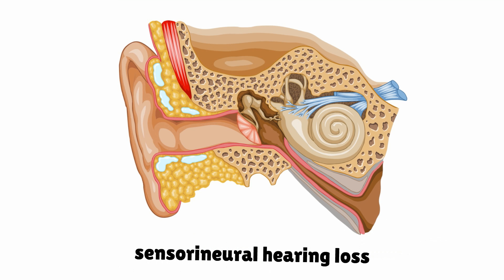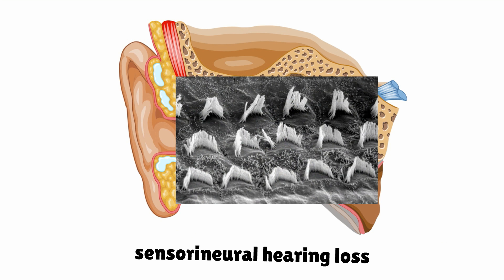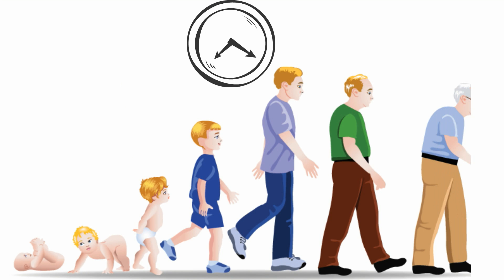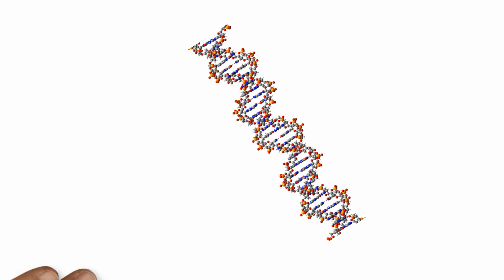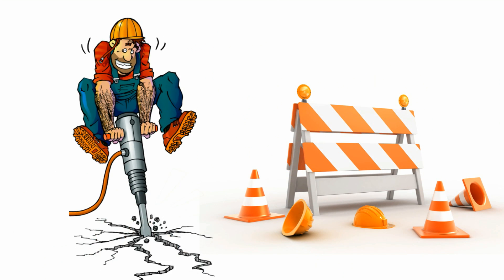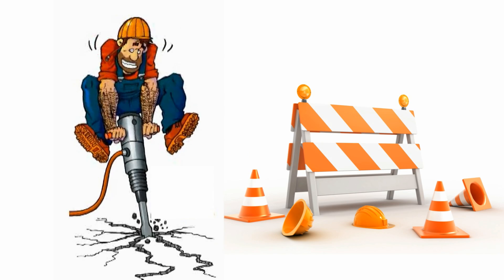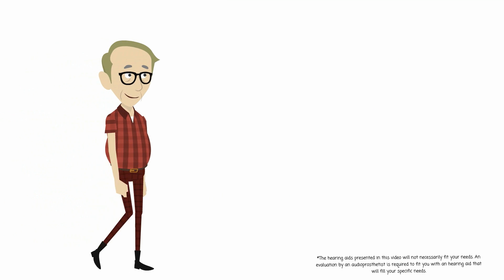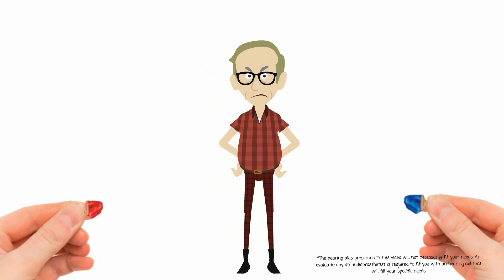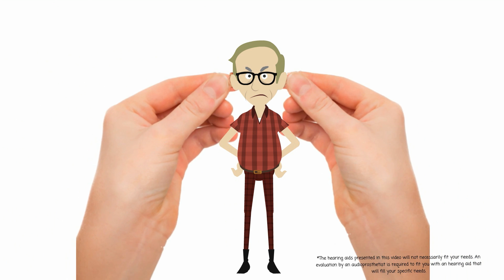The second type, sensorineural hearing loss, represents 90% of cases. It results from the destruction of hair cells in the cochlea. It is often due to aging, can be genetic, or be the consequence of repeated exposure to very loud sound. This type of loss is irreversible, but can often be compensated by hearing aids.